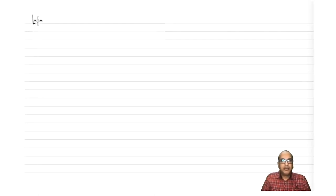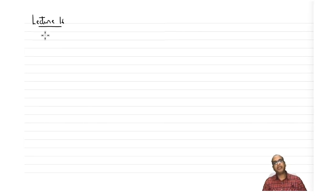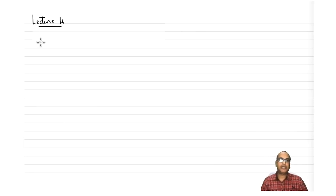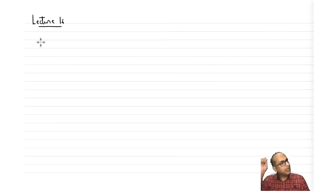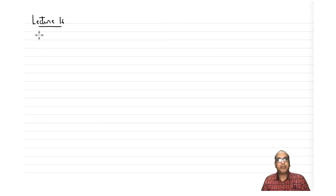Welcome back. Let us start with Lecture 16. In the last lecture we saw matrix representation when we use xyz coordinates or an orthogonal set of coordinates. Now let us see if we can use the same principle to develop matrix representation for a point group.